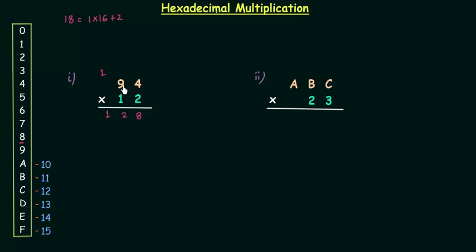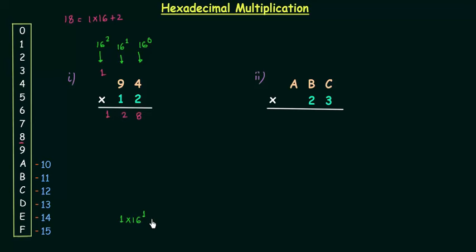Now I will multiply 94 by this 1. 1 multiplied by 4 is 4, but we have to find out the weight. The weight of this position is 16 raised to power 2, this position is 16 raised to power 1, and this position is 16 raised to power 0. So 1 multiplied by 4 means 1 multiplied by 16 raised to power 1, multiplied by 4 multiplied by 16 raised to power 0.